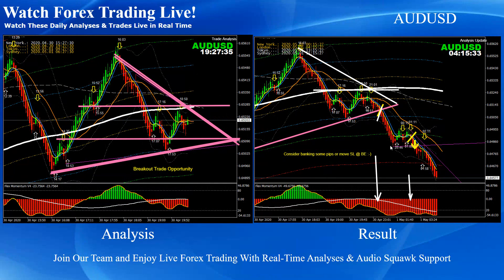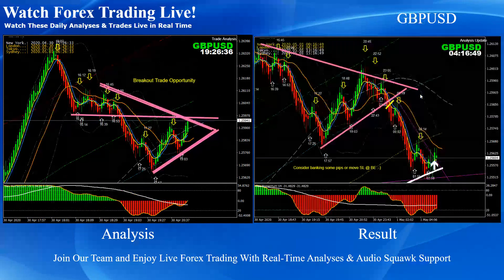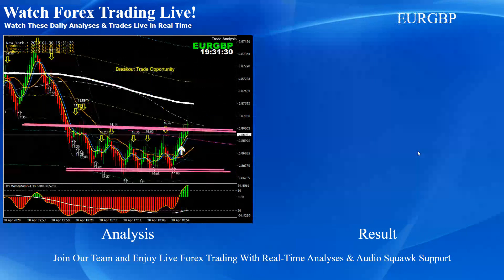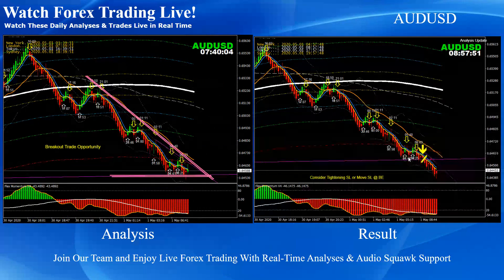On AUD/NZD, we had a similar pattern — triangle pattern breakout and pullback, beautiful short trades. GBP/USD triangle pattern breakout, beautiful short trade. GBP/CHF consolidation breakout, beautiful short trade. EUR/GBP consolidation breakout — even after the breakout we had a beautiful pullback that gave us confirmation of a beautiful long trade on EUR/GBP.